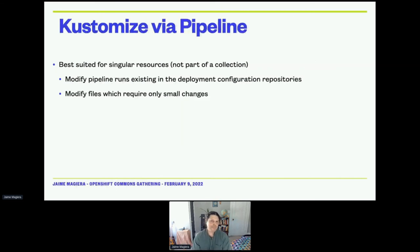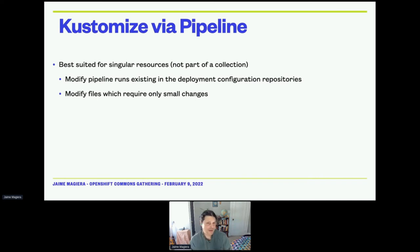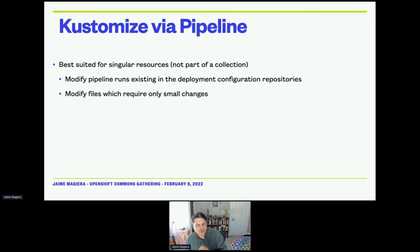We do use Kustomize — via pipeline. I found it's best suited for singular resources, things that aren't part of a collection where multiple things don't need to be collected. I use it to modify pipeline runs existing in the deployment configuration repositories and to modify files that require only very small changes, like a single value.